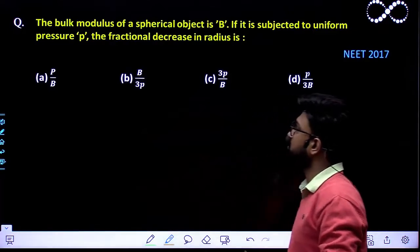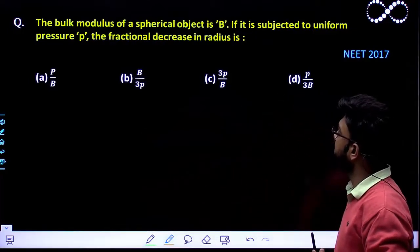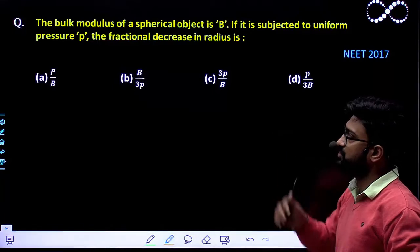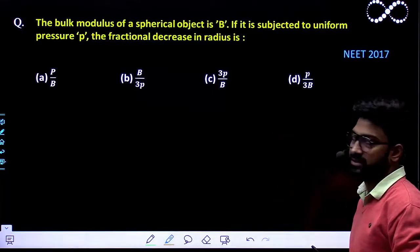Question says the bulk modulus of a spherical object is B. If it is subjected to a uniform pressure P, the fractional decrease in the radius is.